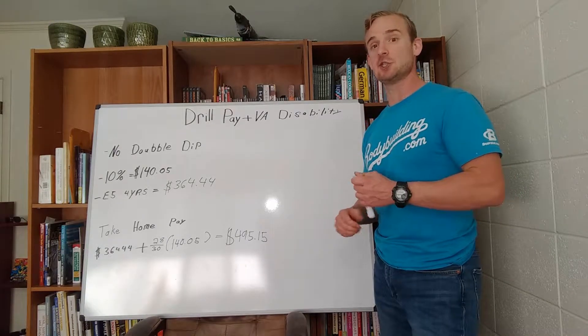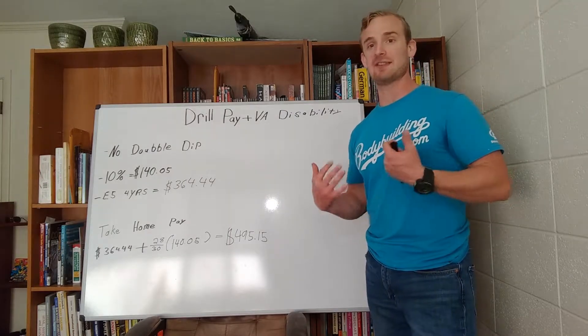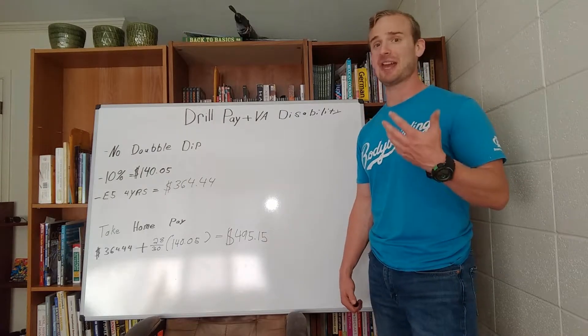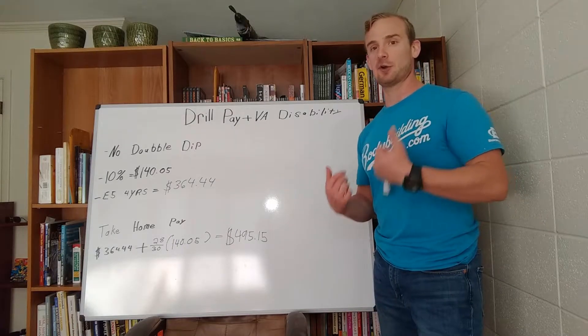Now, that does not mean that you have to choose drill pay or VA pay. So let's suppose that I have a 10% disability, perhaps I have tinnitus or something. Right now, that's $140.05 per month.